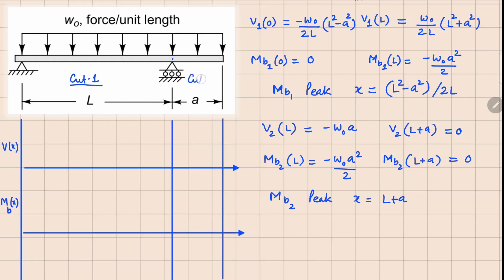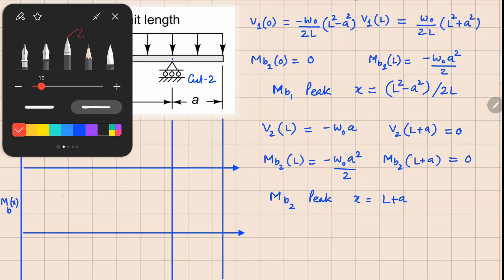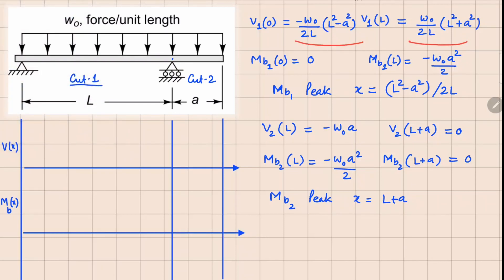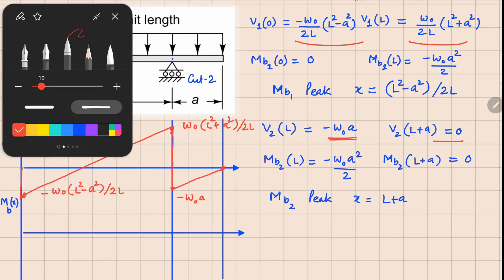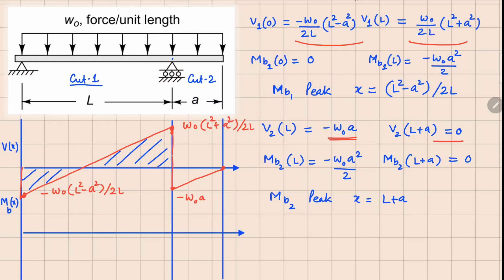Now plotting: the Cut 1 region shows V1, and the Cut 2 region shows V2. For V1, at x=0 it's a negative value and at x=l it's positive, so we connect them with a straight line. The value at 0 is minus w₀(l² minus a²)/(2l) and at l is w₀(l² plus a²)/(2l). For V2, at x=l we have minus w₀a and at x=l+a it's 0, connected by a straight line. That is the shear force diagram.